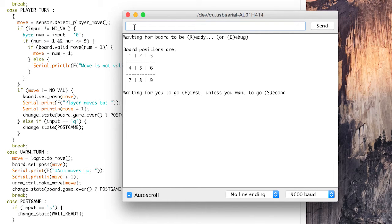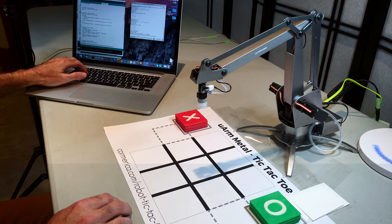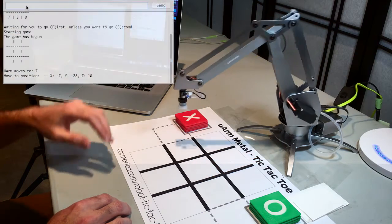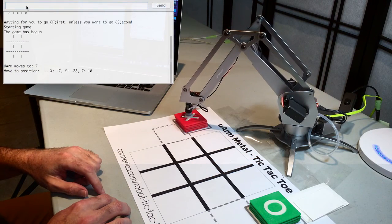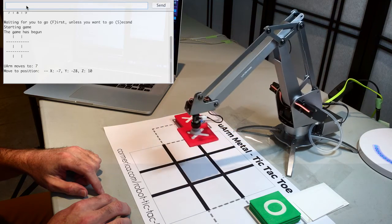So, at this point in the project, we can again play a full game. This time, the arm not only determines its moves based on the opponent's, but can now physically respond by moving its own markers as well.